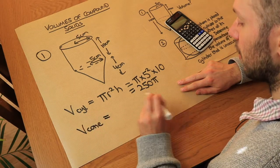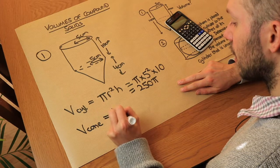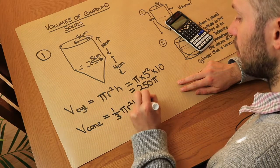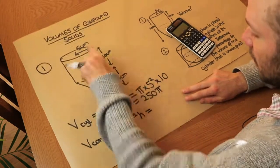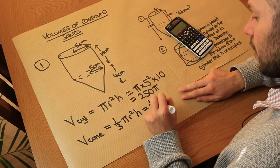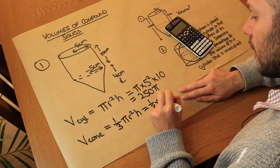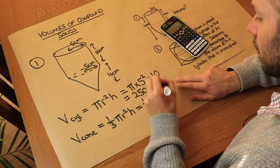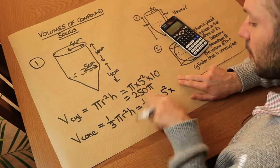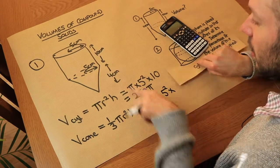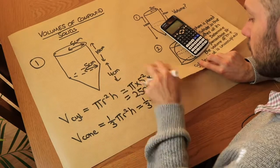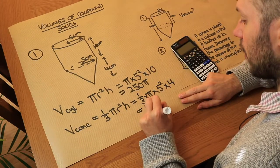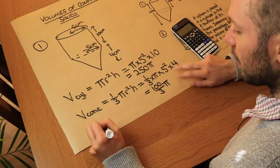The formula for the volume of a cone, which we explore in another video, is one-third π r² h. Using the numbers provided, that's one-third times π times 5 squared times 4, which gives us 100/3 π.